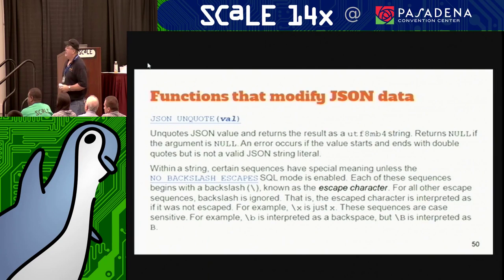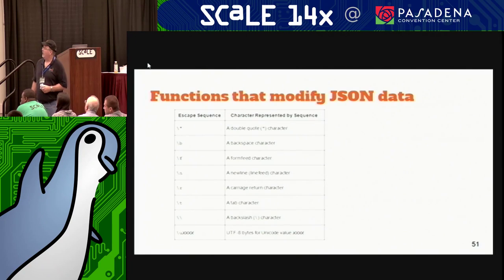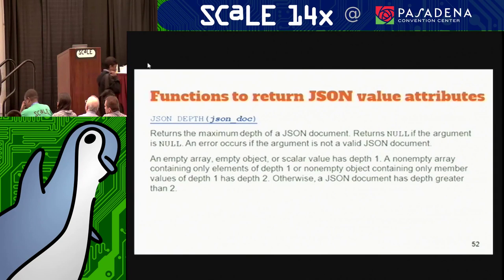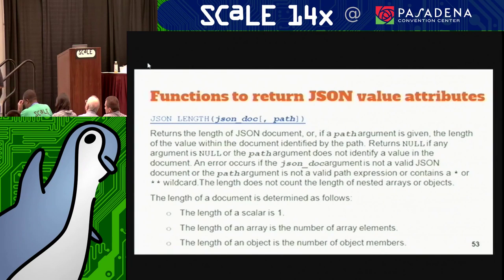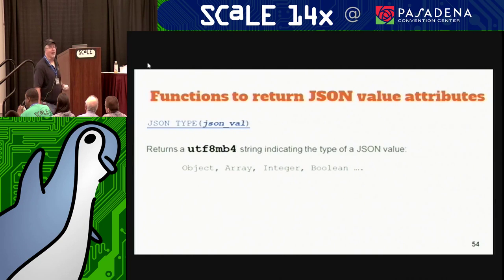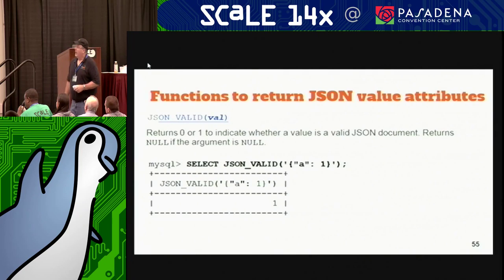If you have something in JSON and want to edit it out of JSON, you can use JSON_UNQUOTE. You can also embed form feeds, tab characters, backslashes, UTF-8 Unicode values. JSON_DEPTH tells you the depth of your document, and JSON_LENGTH tells you how many items you have. Remember, everything you get back is going to be UTF-8MB4 — if you're not used to Unicode character sets, be advised they take up extra space. Before you throw something in the database, run it through JSON_VALID to make sure it's valid JSON.